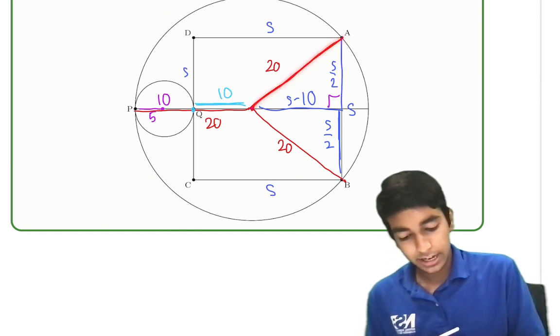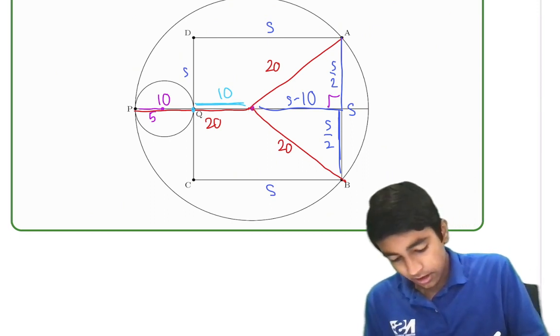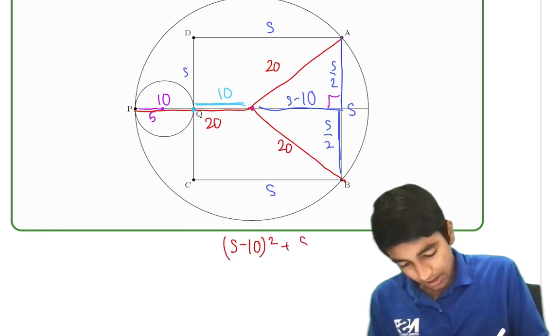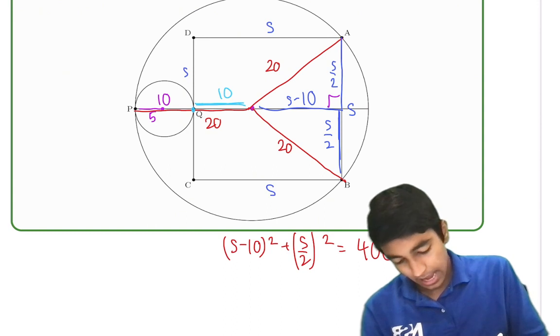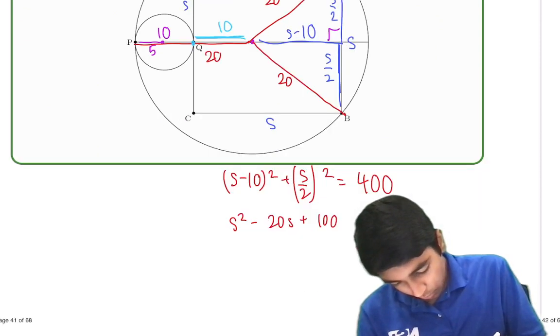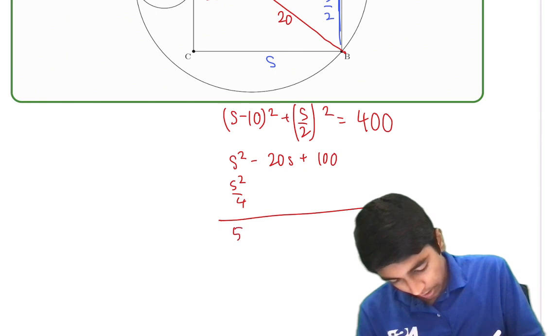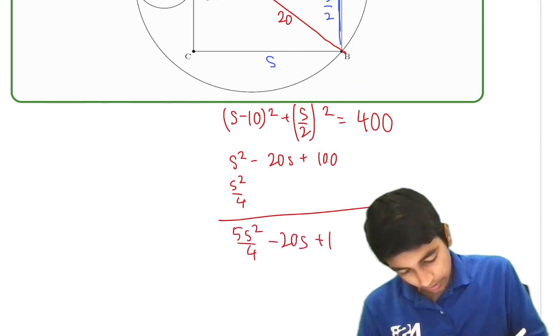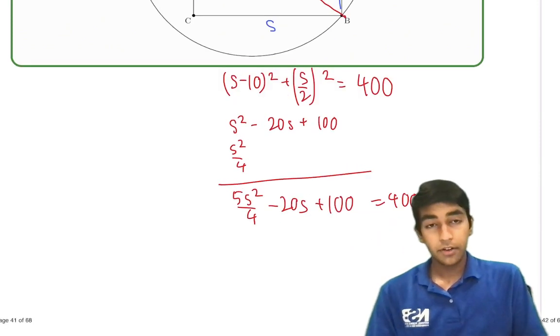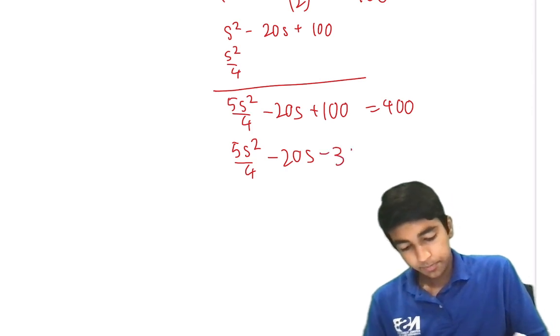So we use (s minus 10) squared plus (s by 2) squared equals 400. s squared minus 20s plus 100 plus s squared over 4. And the sum is 400. The sum is 5s squared over 4 minus 20s plus 100 equals 400. We subtract 100 from both sides, or subtract 400 from both sides. You get 5s squared over 4 minus 20s minus 300 equals 0.